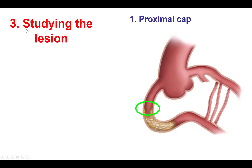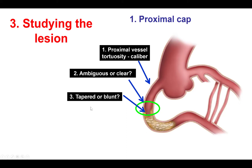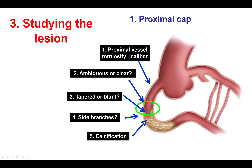The third key concept is that of studying the lesion. It is very important to take the time to carefully look at the diagnostic angiogram and understand the anatomy of the occlusion. We first start at the proximal cap and look at the proximal vessel — is there disease proximally, calcification, how big is the proximal vessel? Is the proximal cap clear or ambiguous? Is it blunt or tapered, with tapered being easier to cross? Are there side branches next to the proximal cap that can make it difficult to cross because wires tend to enter there?